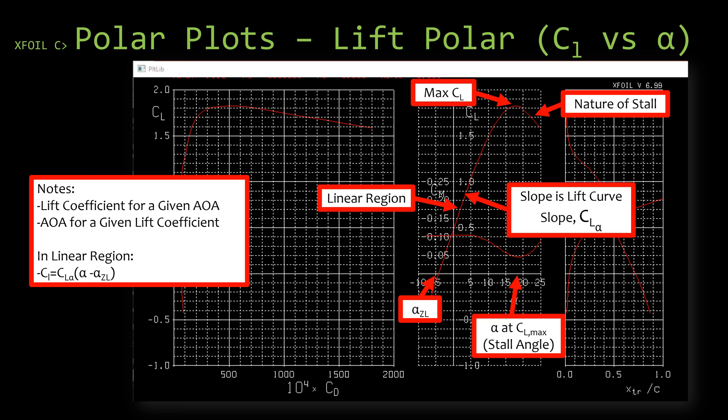You can get a lot of information from this plot. You can see where the alpha of zero lift is. So if you have a cambered airfoil, that's going to be a non-zero value. You have a linear region where you can get the slope. You can also look to determine where your maximum lift coefficient is. The angle at which you hit your maximum lift coefficient is also your stall angle. You can look a little bit past stall to see what the nature of stall is. Is it a gentle stall? Is it a sharp stall?